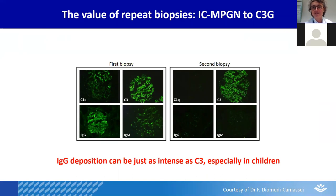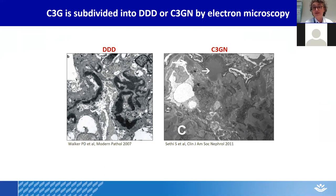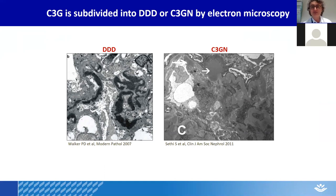If you look at the kidneys at higher magnification on biopsy, you can distinguish within C3 glomerulopathy between dense deposit disease — seen on the left — and C3GN, where the deposits with the white arrow are less intensely dark gray, can be puffy and round forming so-called humps, and are more on the sub-epithelial side of the GBM. The distinction by electron microscopy between these two forms allows us to sub-classify the disease.